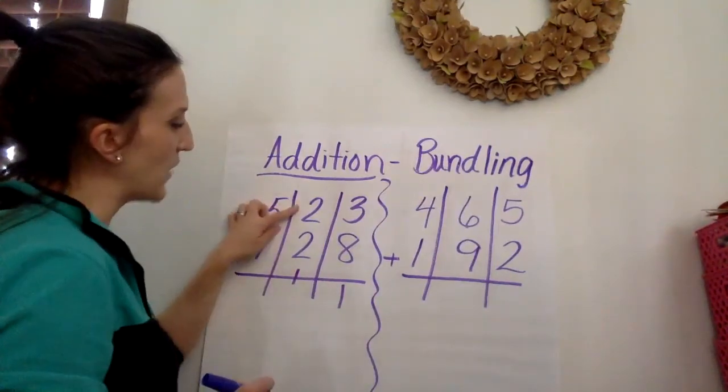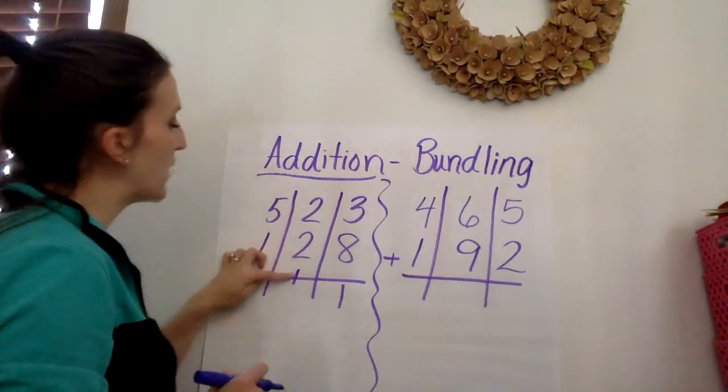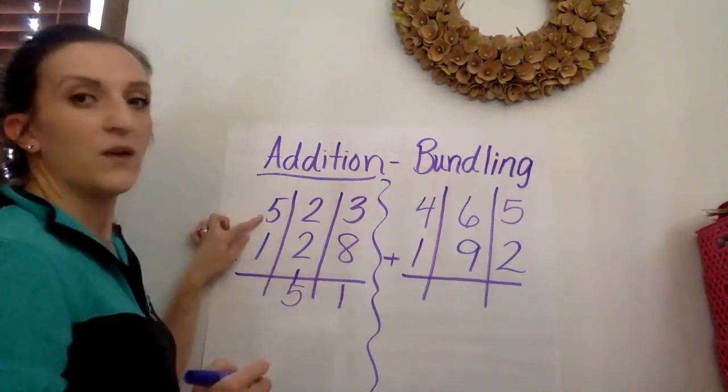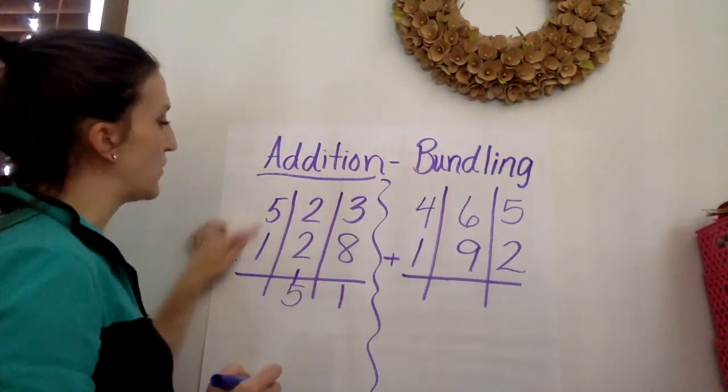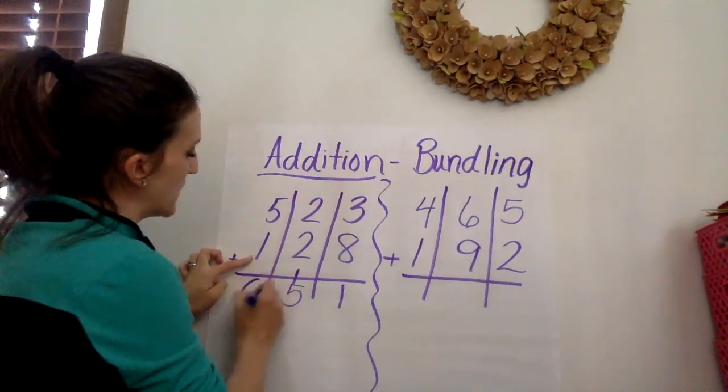So now we're in the tens place and we're adding 2 plus 2 which equals 4 plus 1 equals 5. Then we are going to move on to the hundreds place. 5 plus 1 equals 6.